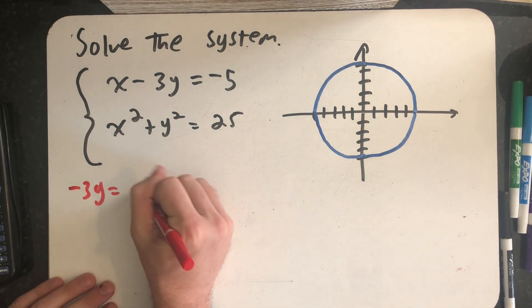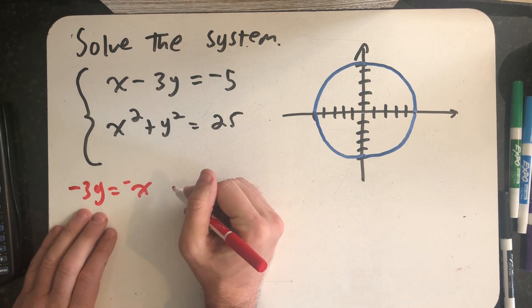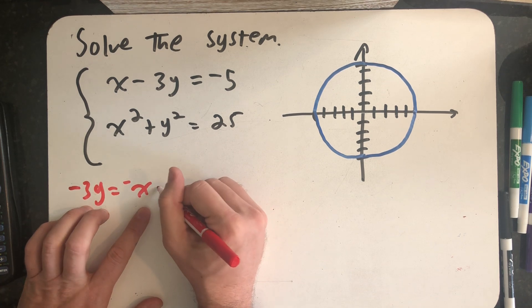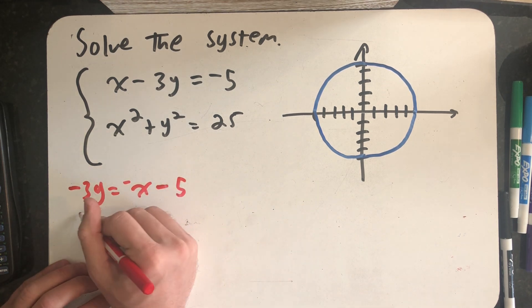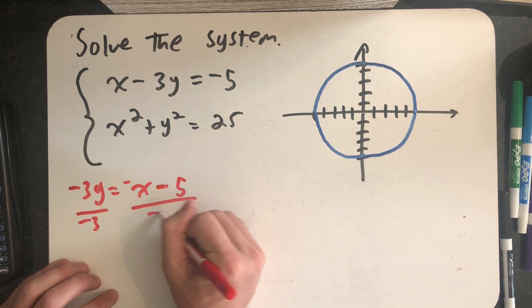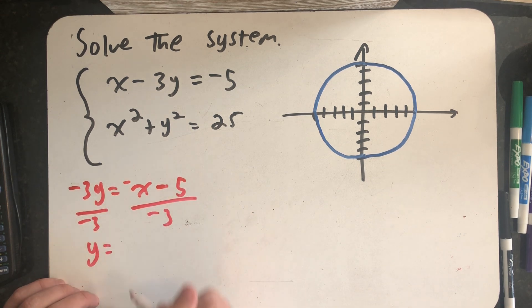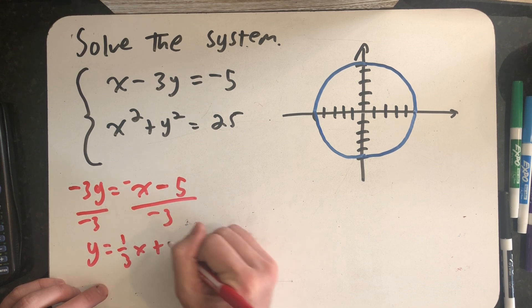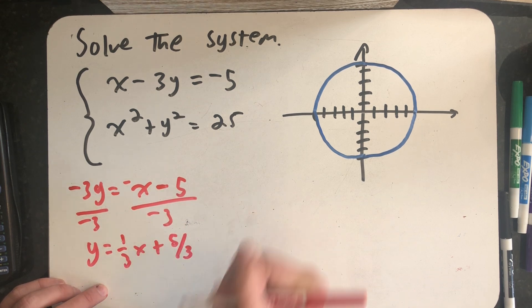Taking x away from both sides would give me that minus 3y is equal to minus x minus 5, dividing by minus 3. This tells me this is the line y equals one third x plus five thirds.